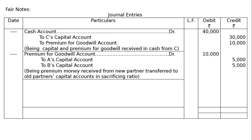Second entry: Premium for goodwill account debited Rs. 10,000; To A's capital account Rs. 5,000; To B's capital account Rs. 5,000. Being premium money received from new partner transferred to old partners' capital accounts in sacrificing ratio of 1:1. Whatever premium is received from C is the money to be taken by A and B, because goodwill is the result of past performance of A and B, hence it was distributed to them in equal ratio.